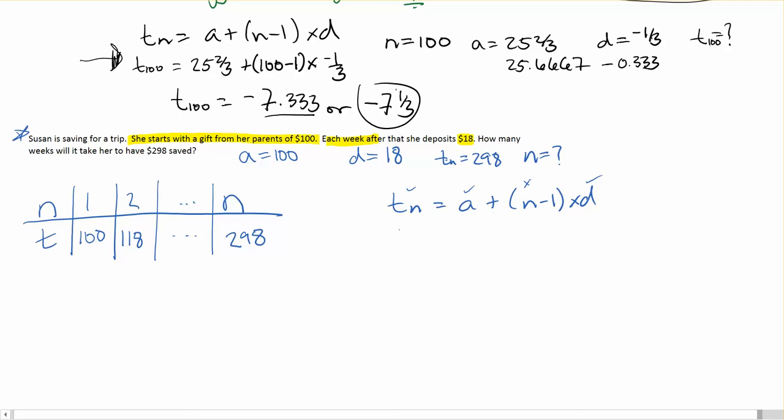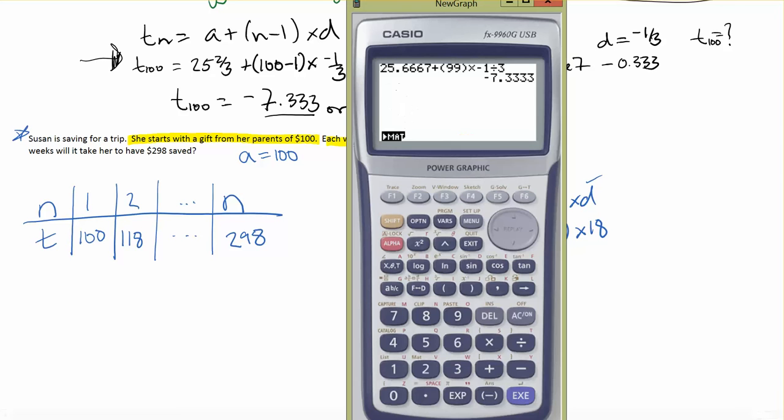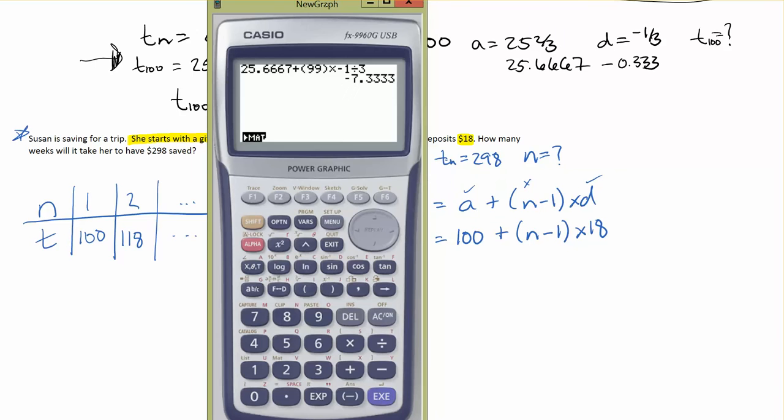That means if I plug everything in that I know, 298 is equal to 100 plus N minus 1, times 18. I should be able to use solver because there's only one thing in that equation that I don't know.